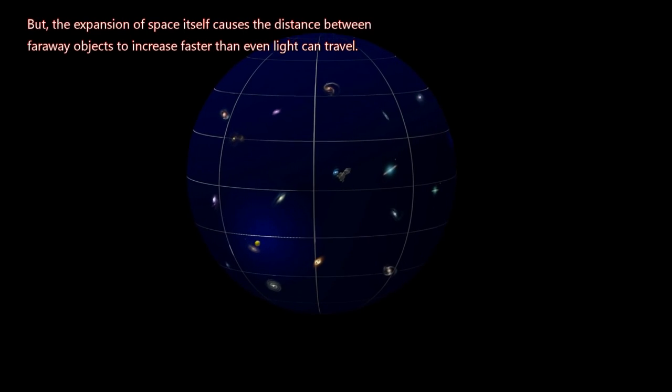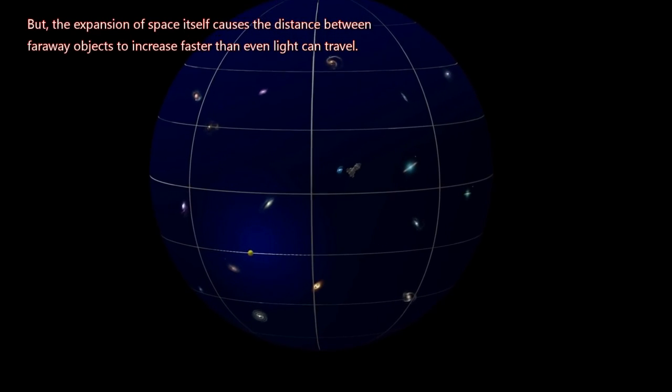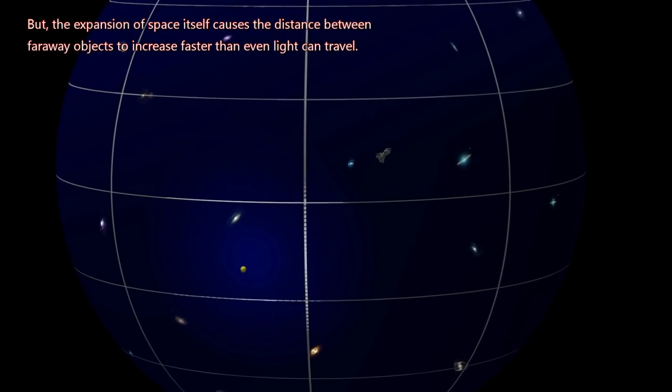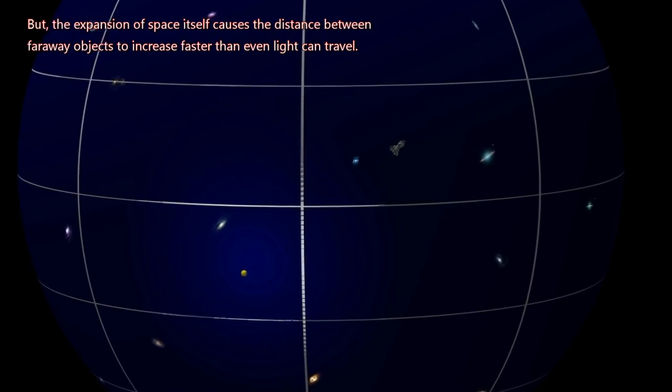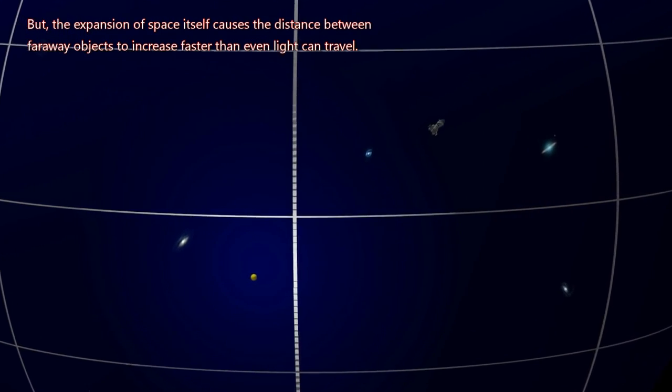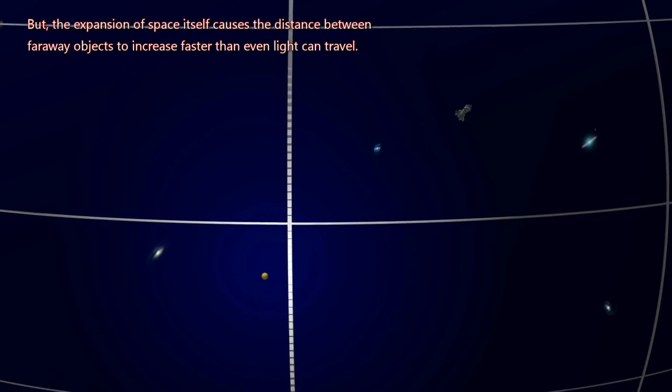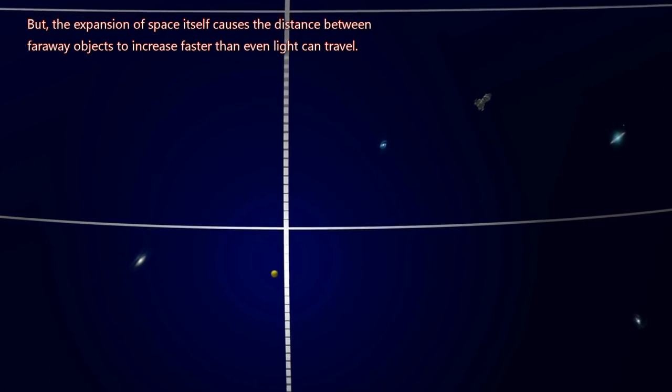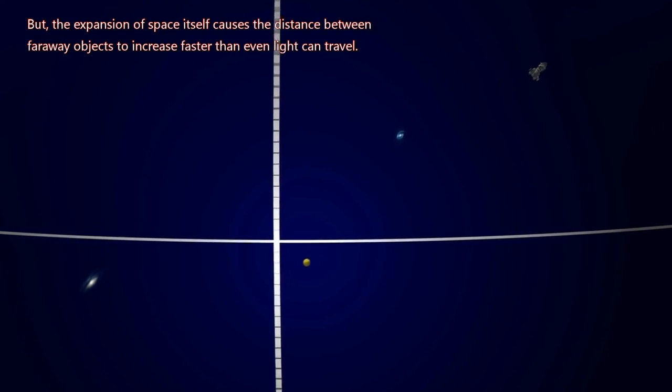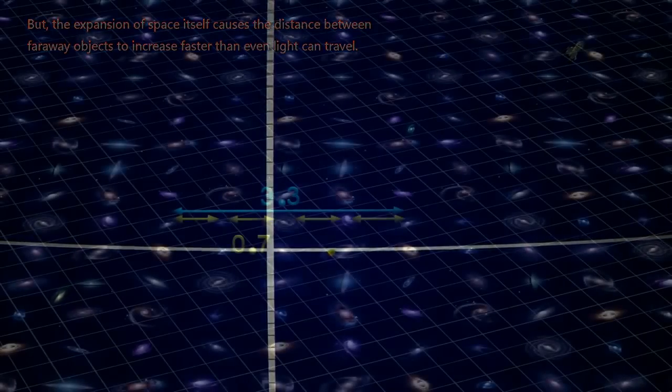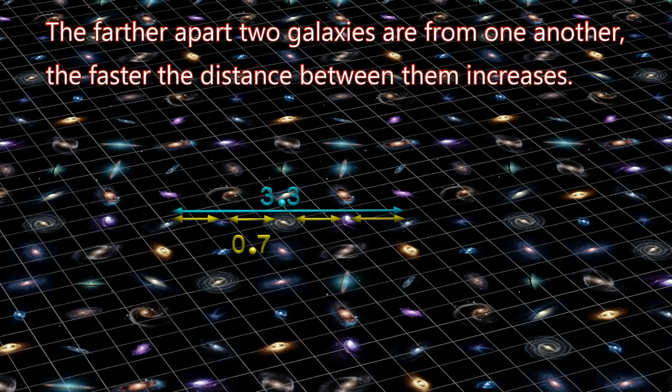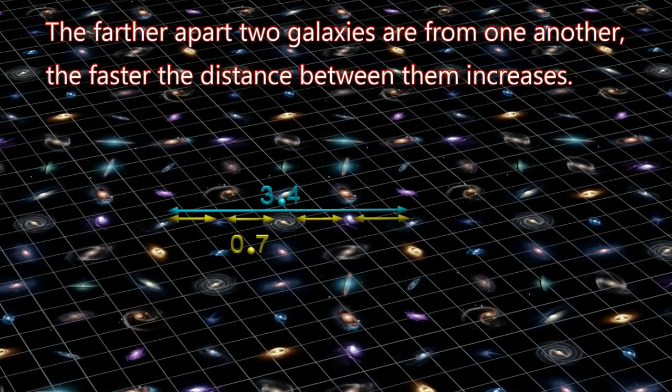But the expansion of space itself causes the distance between far away objects to increase faster than even light can travel. The farther apart two galaxies are from one another, the faster the distance between them increases.